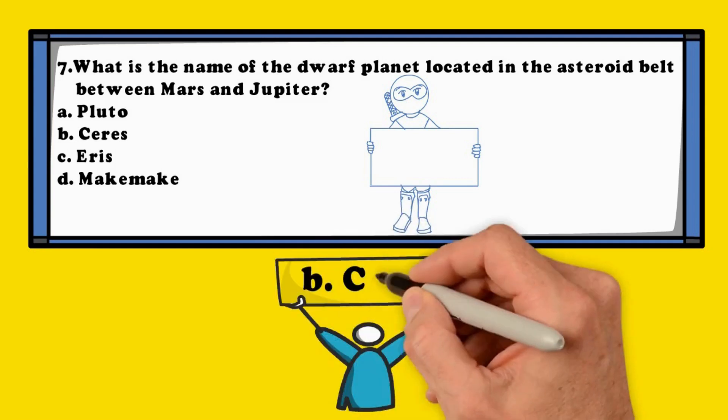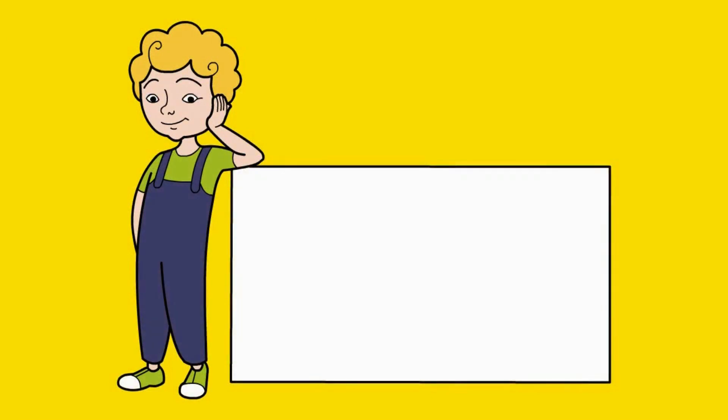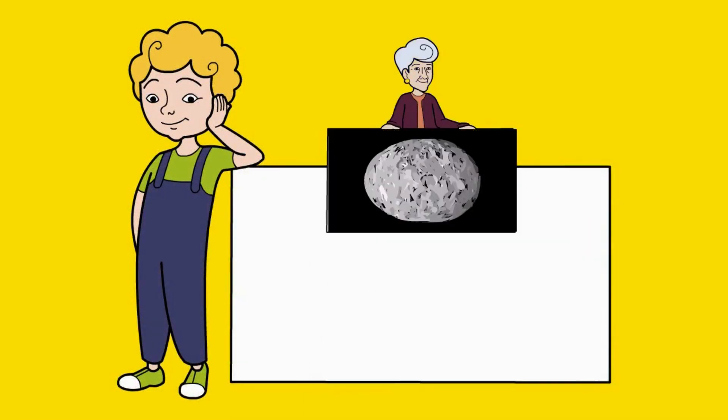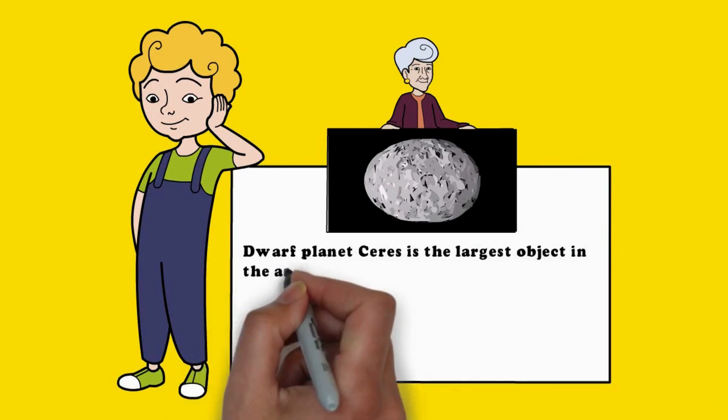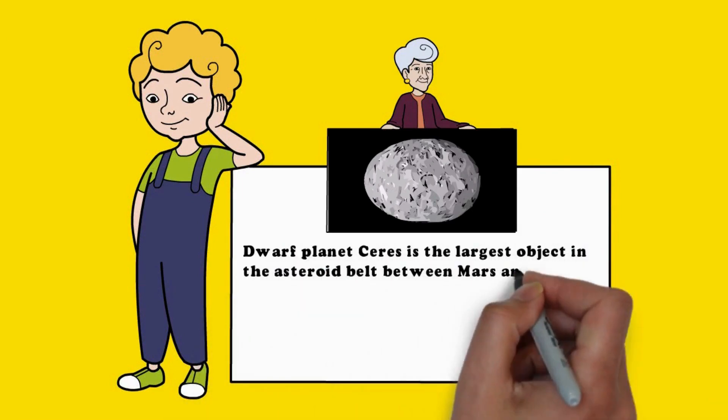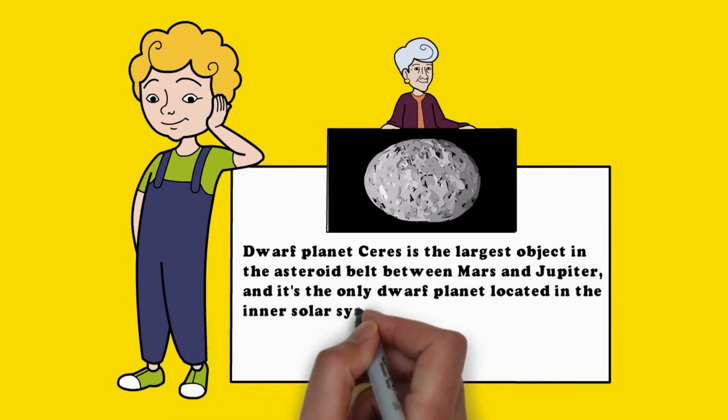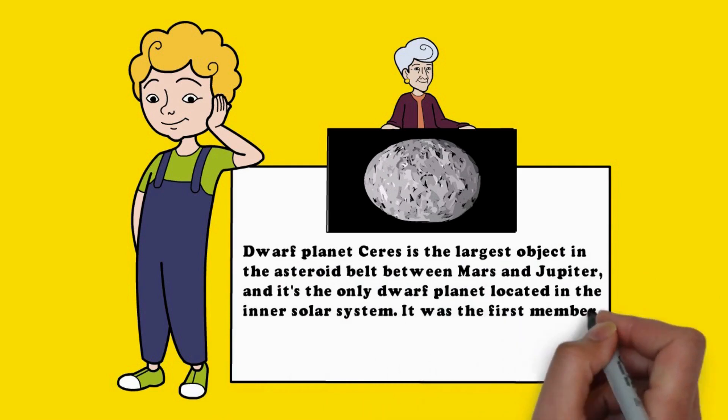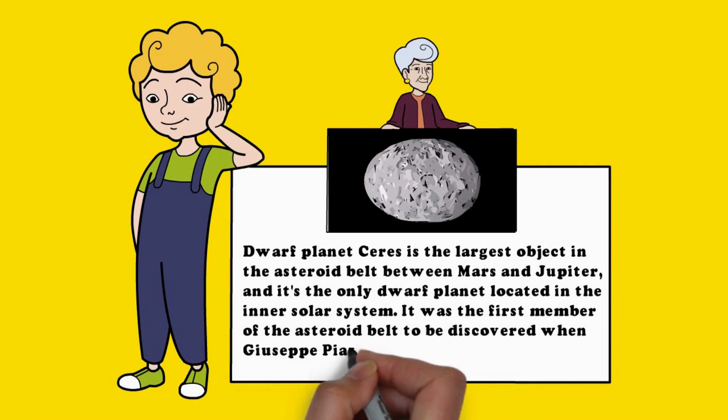The answer is B. Ceres. Dwarf planet Ceres is the largest object in the asteroid belt between Mars and Jupiter. And it's the only dwarf planet located in the inner solar system. It was the first member of the asteroid belt to be discovered when Giuseppe Piazzi spotted it in 1801.